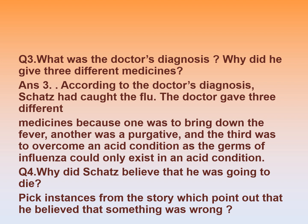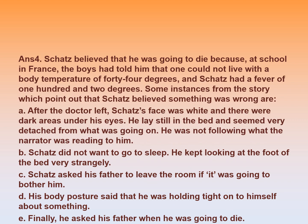Question 4: Why did Skatz believe that he was going to die? Pick instances from the story which point out that he believed something was wrong. Skatz believed that he was going to die because at school in France, the boys had told him that one could not live with a body temperature of 44 degrees, and Skatz had a fever of 102 degrees.